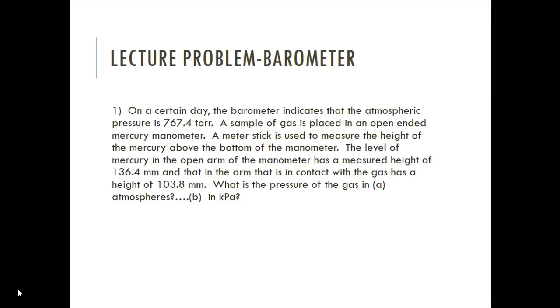So a problem here. On a certain day, a barometer indicates that the atmospheric pressure is 767.4 torr. A sample of gas is placed in an open-ended mercury manometer, and we'll talk about a manometer in just a second. A meter stick is used to measure the height of the mercury above the bottom of the manometer. The level of the mercury in the open arm of the manometer has a measured height of 136.4 millimeters, and that in the arm that is in contact with the gas has a height of 103.8 millimeters. What is the pressure of gas in atmospheres and in kPa? So I want you to try to solve this problem, and we're going to talk about this one tomorrow when we come back to class. This has to do with the idea that we just talked about in the barometer and understanding what's going on, and you need some more information about a manometer.